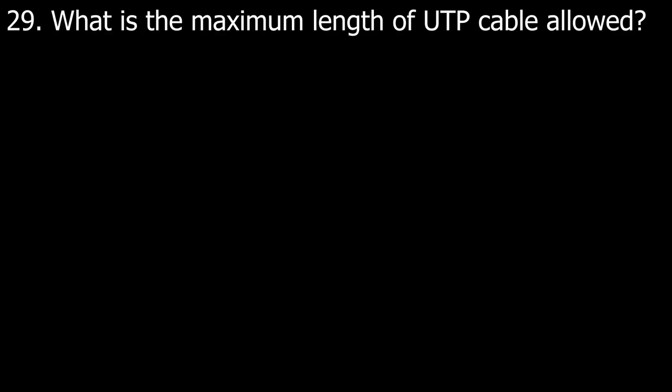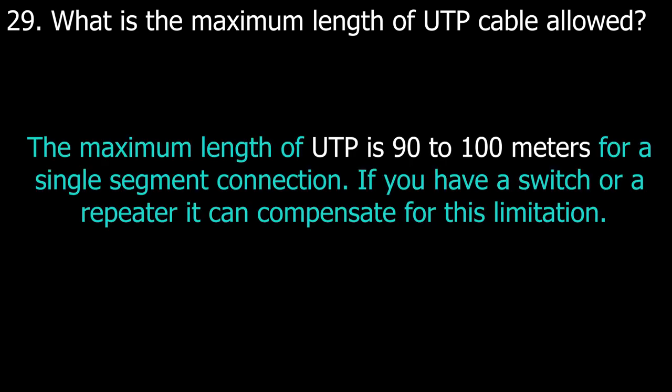Question number twenty-nine: what is the maximum length of UTP cable allowed? The maximum length of UTP is 90 to 100 meters for a single segment connection. If you have a switch or repeater, it can compensate for this limitation.